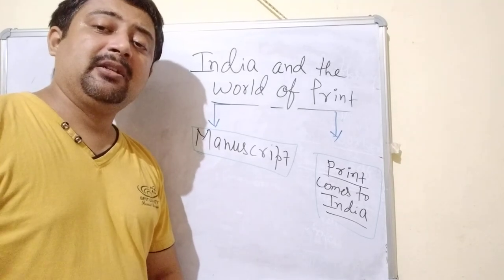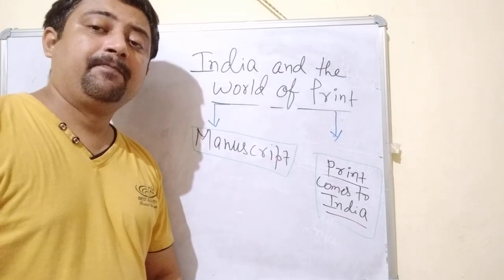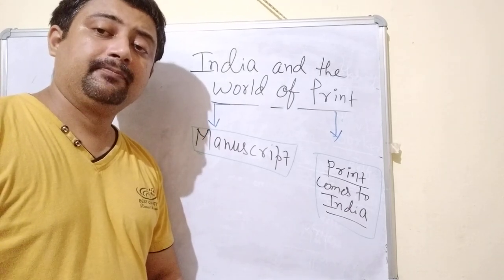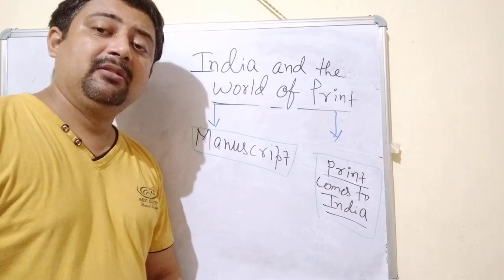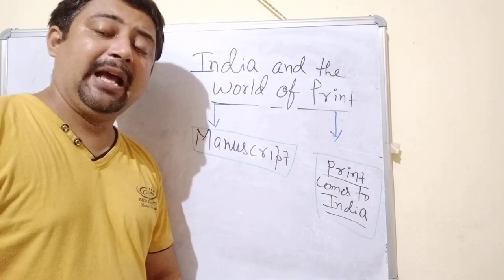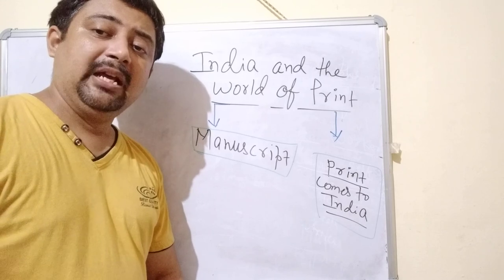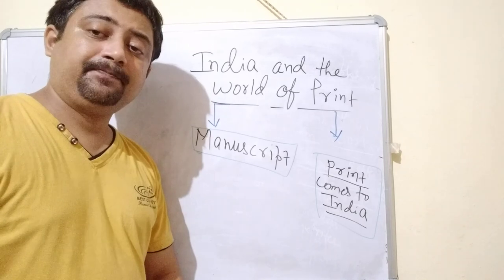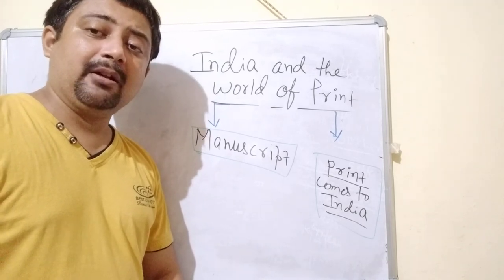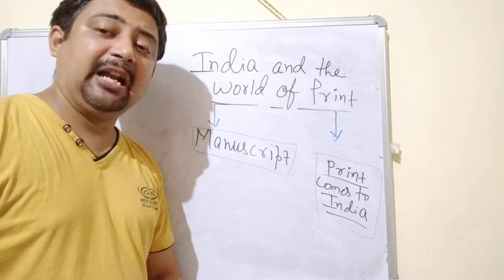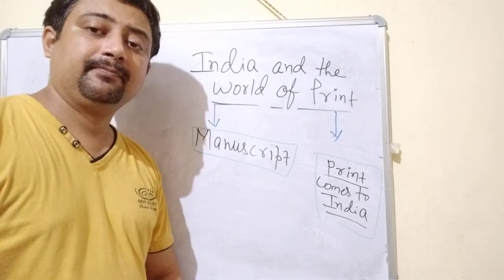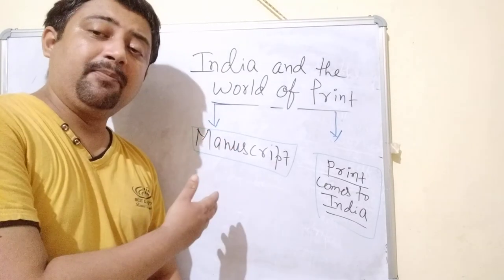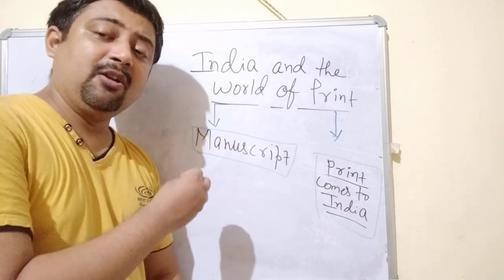But as we already discussed about the problems of manuscripts in European society, the same problems existed in India. Indian manuscripts were also fragile, very difficult to carry because they were not portable, and they were expensive because the copying task was very costly. Because of these reasons, although manuscripts existed, they were not able to produce the impact that was needed at that time. So the first point is: manuscripts were there and mainly written on palm leaves.